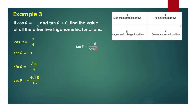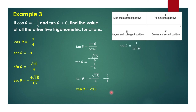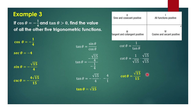For tangent theta, using quotient identities, we have sine theta as negative square root of 15 over 4 and cosine theta as negative 1 fourth. So we have negative square root of 15 over 4 times the reciprocal of negative 1 over 4, which is negative 4 over 1. The 4s cancel, and negative times negative is positive, so tangent theta equals positive square root of 15. For cotangent, we take 1 over tangent theta, which is 1 over square root of 15. Rationalizing gives cotangent theta equal to square root of 15 over 15.